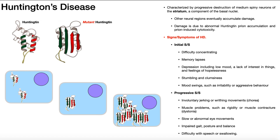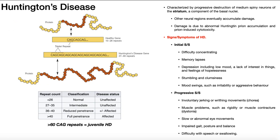Huntington's disease is caused by abnormalities of a protein aptly named Huntingtin. Over here, this is actually normal healthy Huntingtin. Here's the primary structure of the protein Huntingtin. Each one of these circles represents an amino acid, and each amino acid is encoded by a sequence of three DNA nucleotides in the gene.